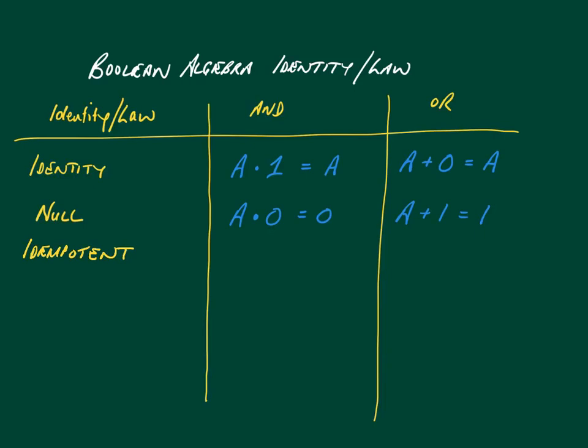With idempotent — that word means that it's an element of a set which doesn't change in value when you multiply it or otherwise operate on it by itself. So a AND a is still a, and a OR a is always a as well.